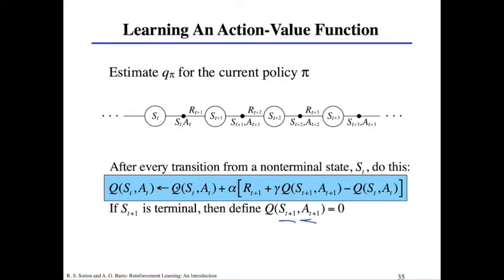We can set the terminal states of Q to zero — this is about the update. Now that we have this TD method, before we had V; we change that to the Q function. This should be straightforward: we're using Q instead of V, but it still represents the value of being in a state and taking an action, and then we get our reward.